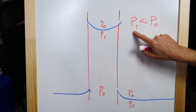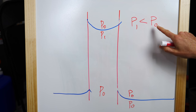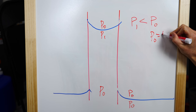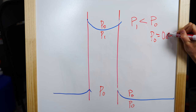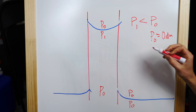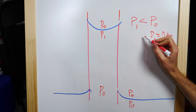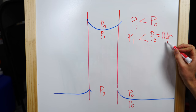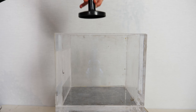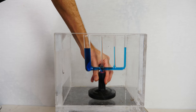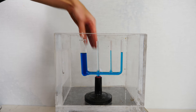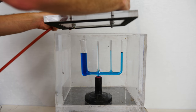Here's where it becomes really mind-blowing. What if P-naught is equal to zero atmospheres — a vacuum? Then that would mean that P-one is less than zero atmospheres. So I'm going to place my capillary tubes in the vacuum chamber and see what happens under vacuum.